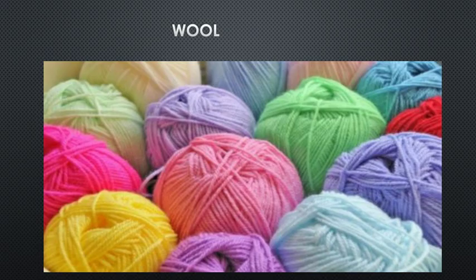Wool is a soft, thick fibre which grows on the bodies of sheep and some other animals. It is a type of protein that can trap air in it. Being a poor conductor of heat, wool keeps the animal warm. The main source of wool is sheep, although it is also obtained from goats, camels, yaks and llamas.